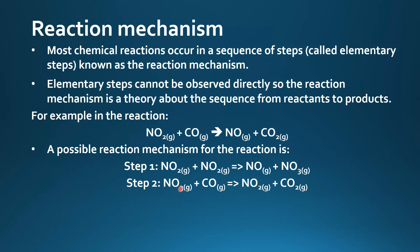And then step 2: nitrogen trioxide reacting with carbon monoxide to give nitrogen dioxide and carbon dioxide. Next we can cancel out what appears on both sides of the arrow — the NO₂ cancels with that NO₂, and the NO₃ also cancels out.